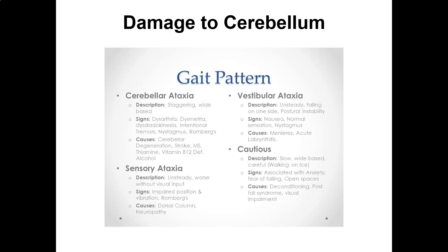Sensory ataxia is unsteady gait worse without visual input, with impaired position and vibration sense. Causes include dorsal column issues and neuropathy — such as in someone who is diabetic. Vestibular ataxia is unsteady with falling to one side and postural instability; you can have nausea and nystagmus but normal sensation. This is usually caused by inner ear issues such as Meniere's disease or acute labyrinthitis. Some patients show a cautious gait — slow and wide-based, like walking on ice — usually due to fear of falling, open spaces, or anxiety from deconditioning or poor vision. These different gait patterns reflect different underlying causes: cerebellar damage, diabetic neuropathy, or inner ear problems.